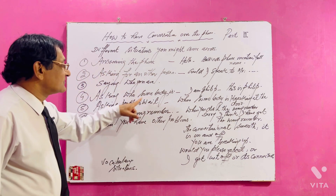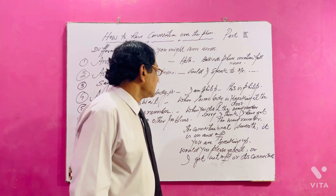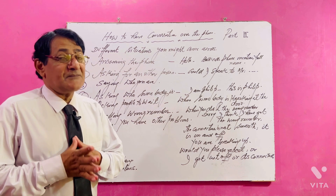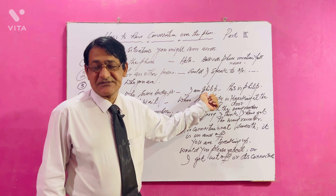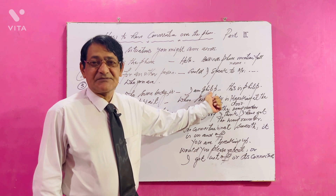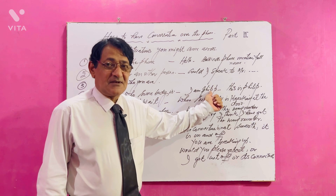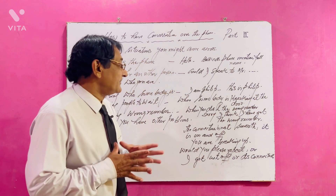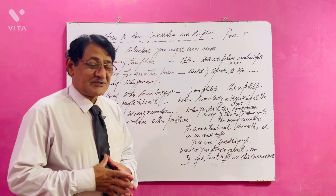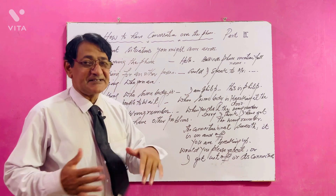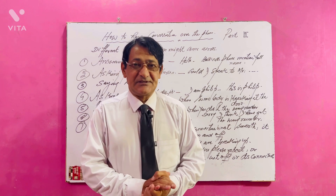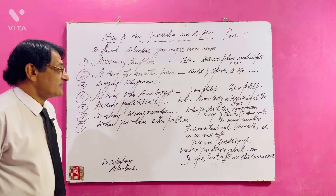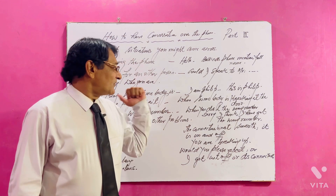Asking who somebody is: suppose someone calls you, you can mention your name. If you are physically together in a meeting, you say 'I'm Philip.' But if you are on the phone — no eye contact, you can't see that person — you say 'This is Philip.' So in a phone conversation, use 'This is Philip' rather than 'I'm Philip.'